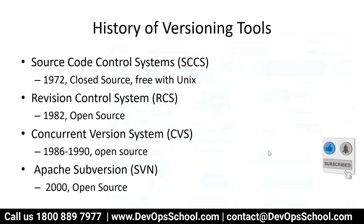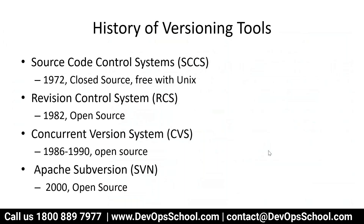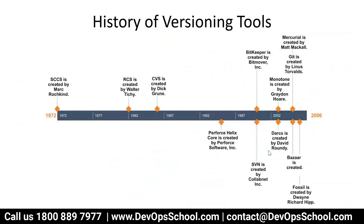Some of the versioning tools from the past include SCCS, RCS, CVS, SVN, and now we have Git — these are open source. Apart from that, we also had many commercial tools like Perforce, ClearCase, DFS, and many more. These are some of the history of tool development, but it's not important for us right now.